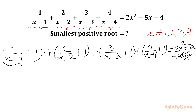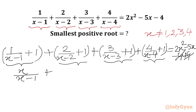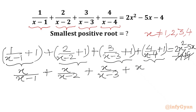Now we have to consider the LCM. We can write 1 plus x minus 1, so the plus 1 and minus 1 cancel. We get x over x minus 1, plus x over x minus 2, plus x over x minus 3, plus x over x minus 4, equal to 2x squared minus 5x.